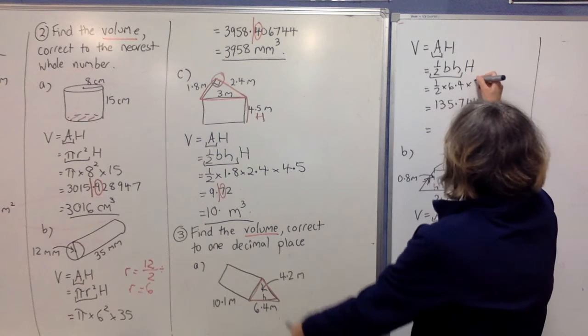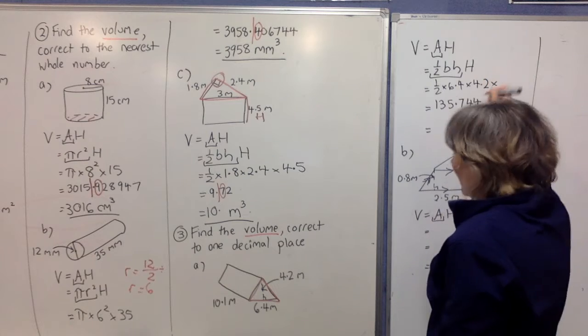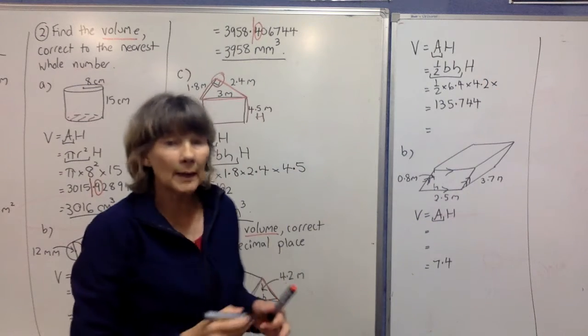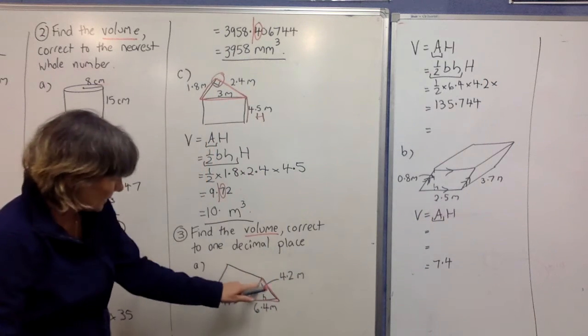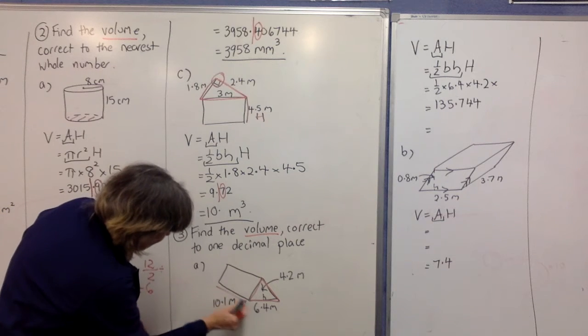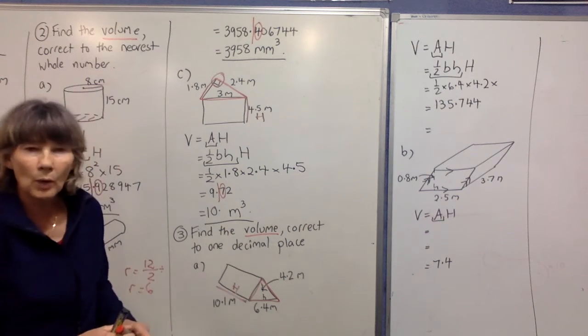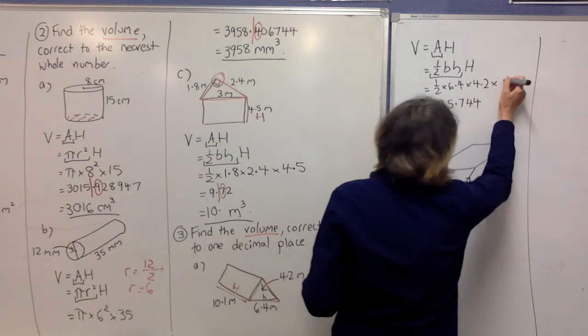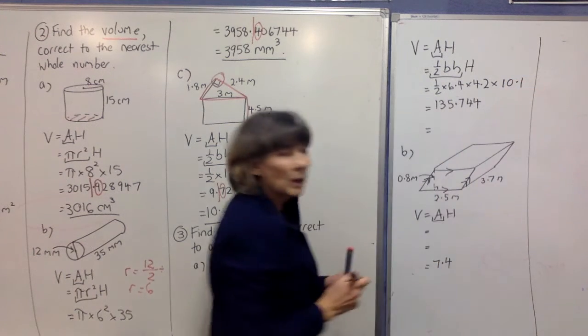Now we're coming away from the triangular base, so this will be our height: 10.1. That goes in here, and then you can work it out on your calculator.